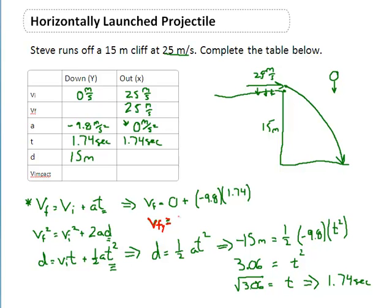VFY is going to be equal to 17.05. And I'm just going to make that 17.1 meters per second. Now because I had a negative in my gravity, I'm going to use my negative sign right here. So that's negative 17.1 meters per second.